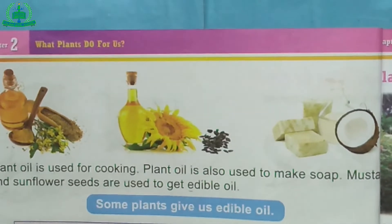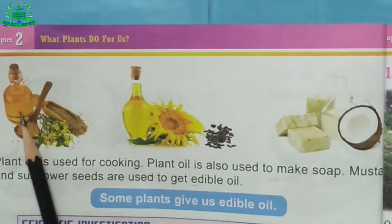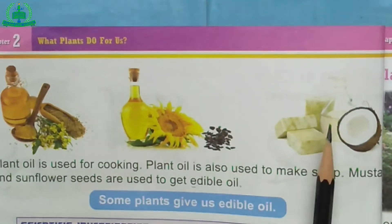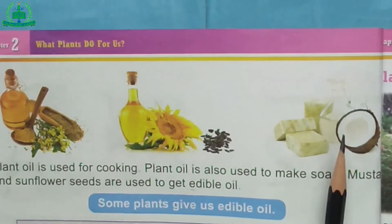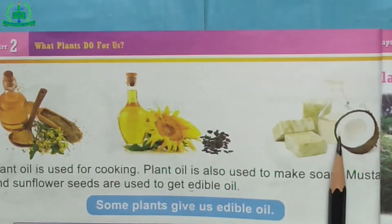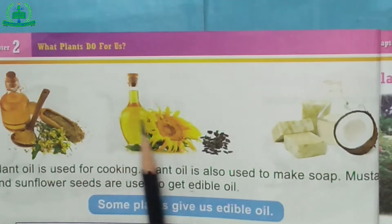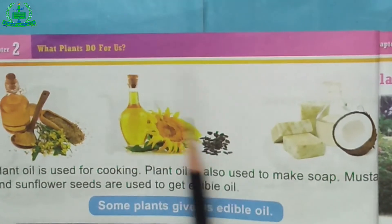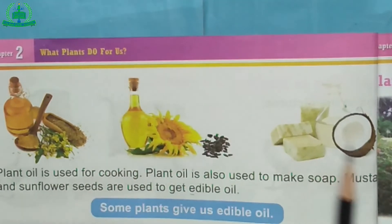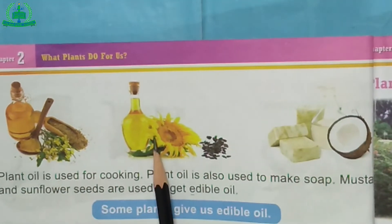Plants give us oil. Plant oil is used for cooking and also used to make soap. Mustard and sunflower seeds are used to get edible oil. Some plants give us edible oil.